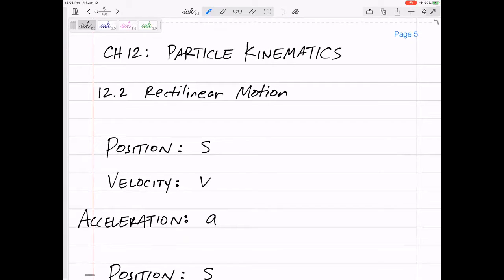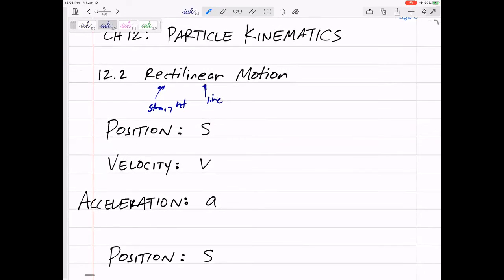1D motion. Rectilinear means straight line motion, alright? So 1D, right? Now, we are concerned with positive and negative, but we're not concerned with left, right, up, down, just 1D motion.